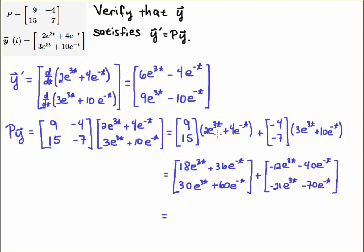Now, if I just multiply this function, I just distribute it, I multiply it by 9, and then I multiply it by 15. Of course, I'm going to get this result, 18e to the 3t plus 36e to the minus t. And then likewise, I get 15 times 2 is 30, 15 times 4 is 60, and then here I get minus 4 times 3 is minus 12, minus 4 times 10 is minus 40, and then minus 21, and minus 7 times 10 is minus 70. So now I get these two vectors.